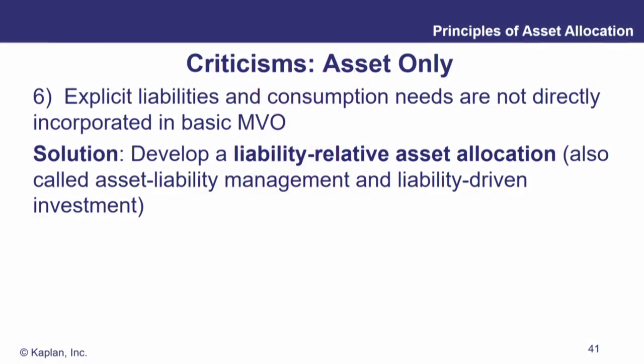If we're looking at mean variance optimization focusing only on assets, we're not explicitly accounting for the liabilities or consumption needs — we're just running an optimization on the assets. That may not be sufficient for certain clients. For example, if there's a pension fund, a bank, or an insurance company, modeling those liabilities is perhaps just as important as modeling the value of the assets.